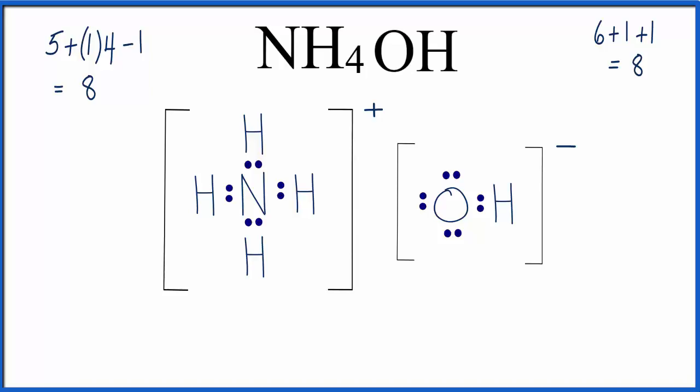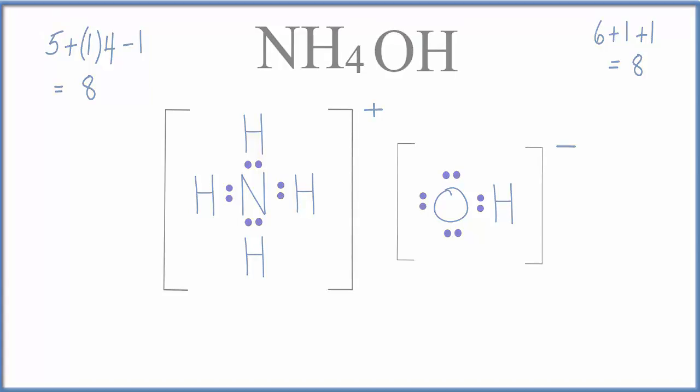So that is the Lewis structure for NH4OH, ammonium hydroxide. It's kind of interesting, we have two covalent compounds, but because they're ions, they have a charge. So these two covalent compounds come together to form an ionic compound. It's a good idea to memorize that NH4 plus is the ammonium ion, and that OH minus when it's attracted to a metal, or when it's attracted to a positive ion like NH4 plus, will be an ion.